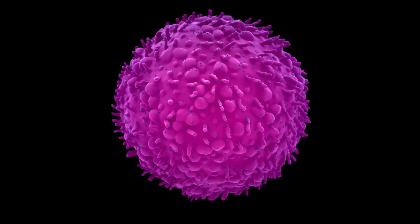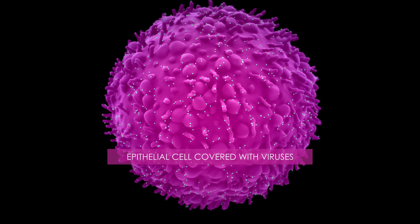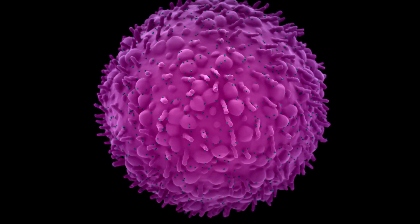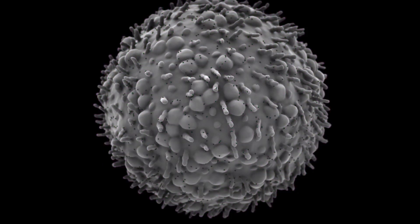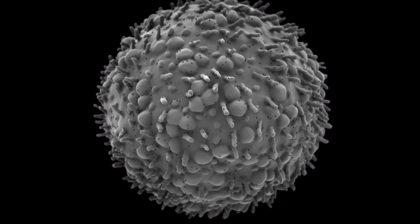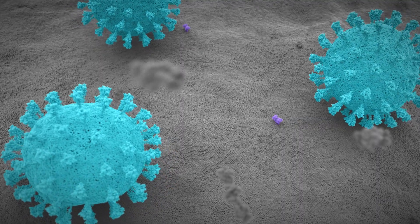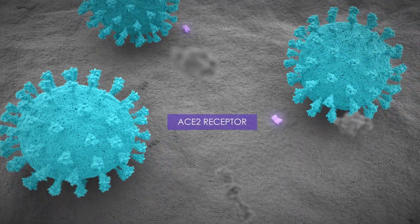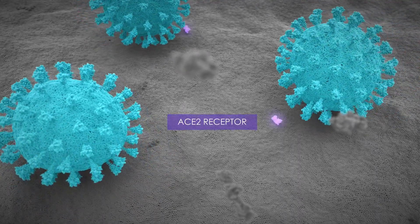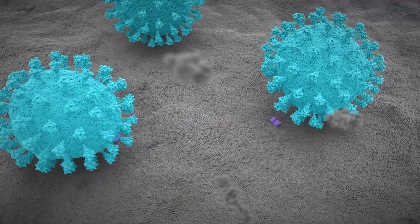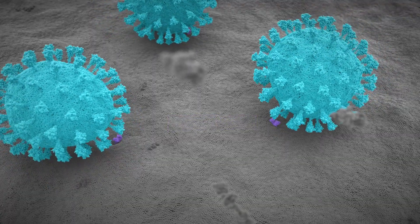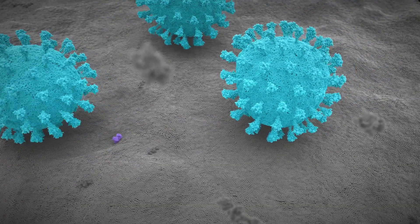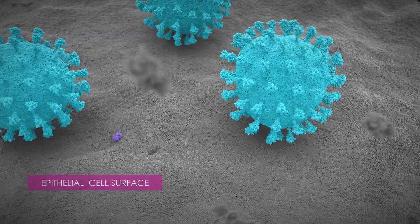These are epithelial cells, which cover many surfaces of our body and internal organs. As shown here, the human cell ingests the virus in a process known as endocytosis. The cell membrane envelops the viruses and then captures them inside, one by one.